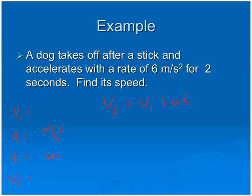The dog starts off at 0 because usually the dog is just sitting there when you throw the stick, so 0 meters per second. The acceleration they tell us here is 6 meters per second squared. It takes 2 seconds to get there. So, vf equals 0 plus 6 times 2. Vf is 12 meters per second.